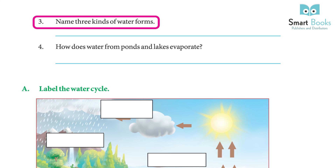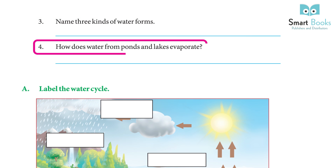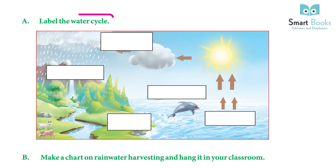(3) Name three kinds of water forms. Answer: solid, liquid, and gas. (4) How does water from ponds and lakes evaporate? Water in ponds, lakes, seas, rivers, and oceans gets evaporated due to the heat of the Sun.